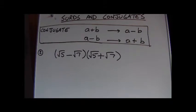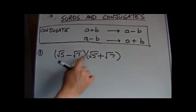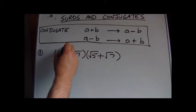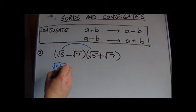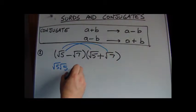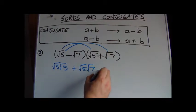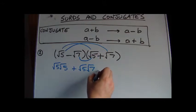In this example we've got two surds in the first expression and we're multiplying by the conjugate, so we change the negative to a positive. So we'll multiply the terms out again. So this time we've got root 5 times root 5. We've got that times that, so that's going to be plus root 5 times root 7.